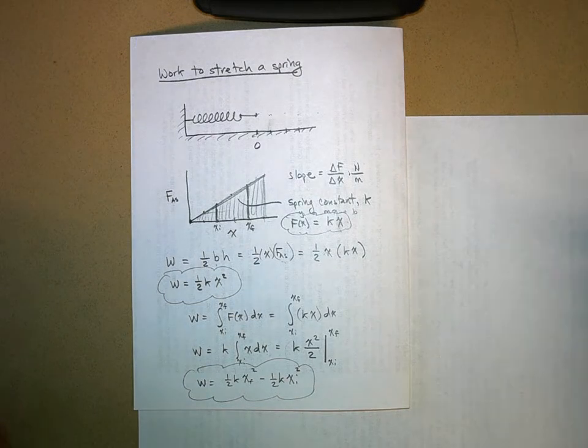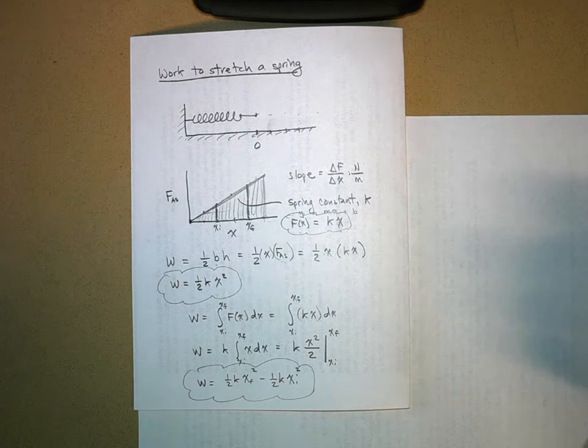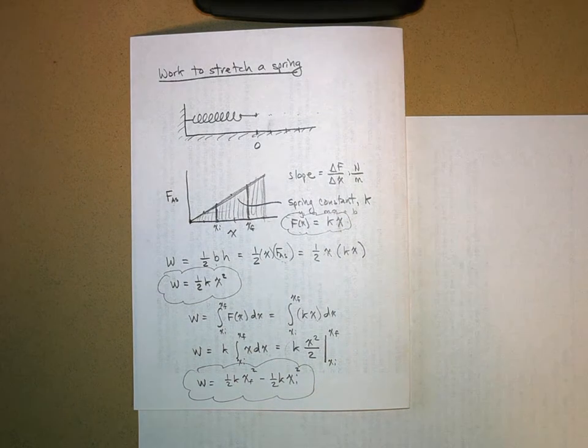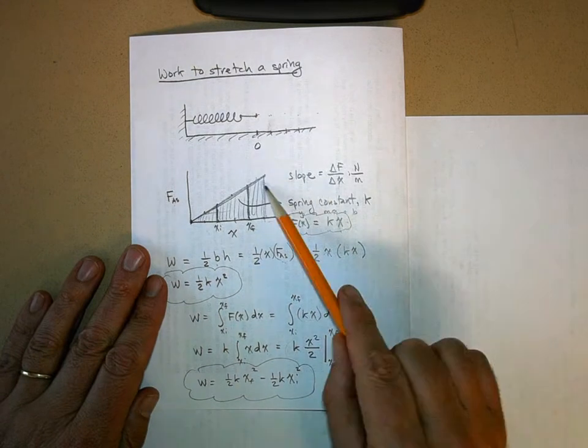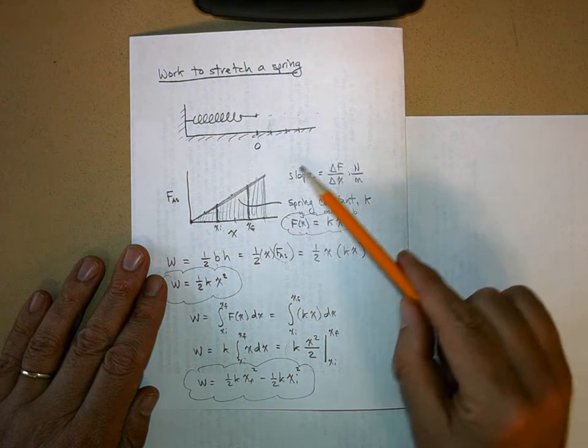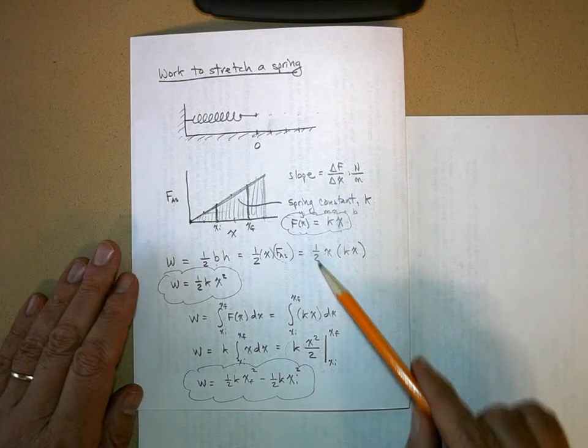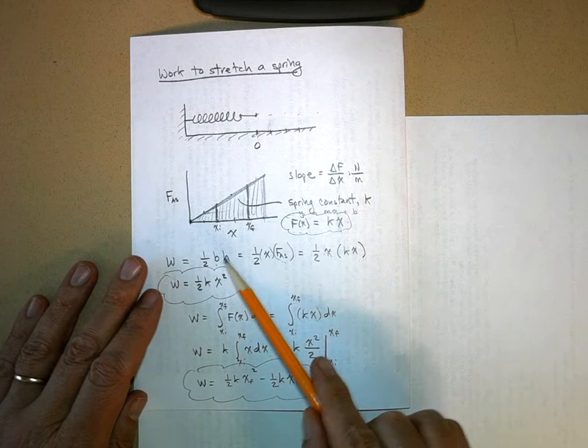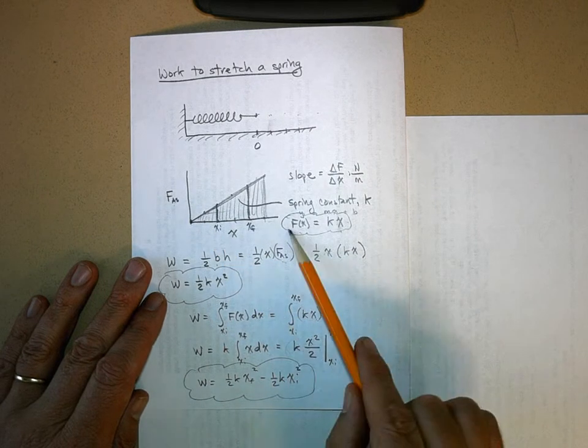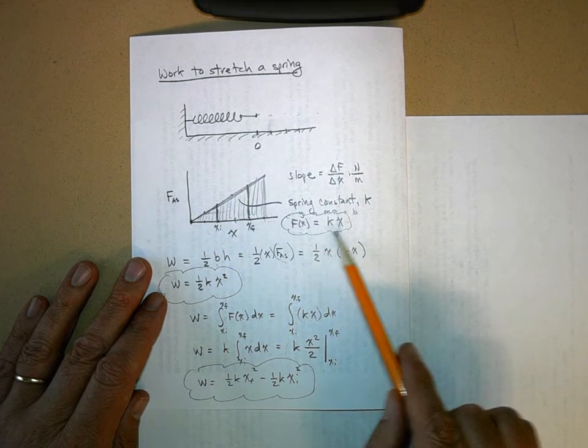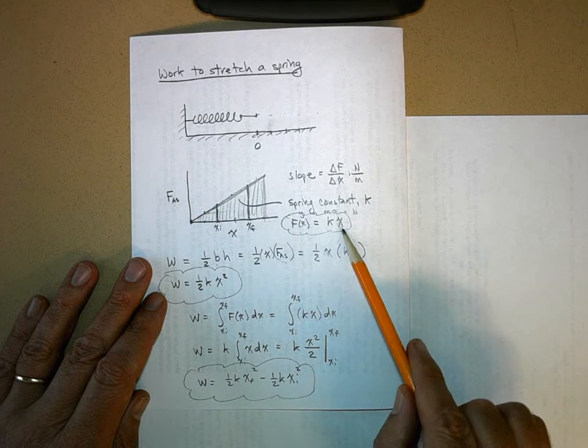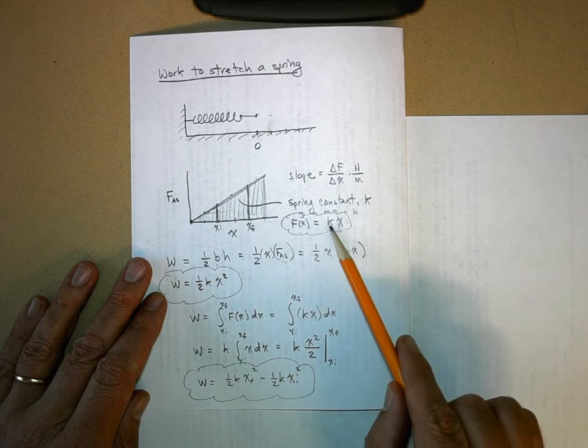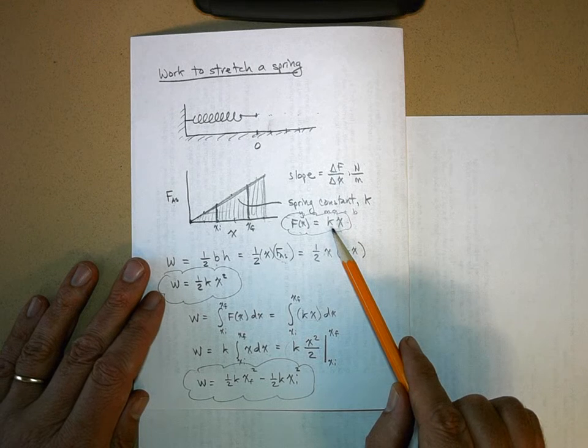Obviously, if you overstretch the spring, you can break it, and that's going to screw up this graph and all that. We're not talking about those kinds of situations, everything here is good. The slope of this line is called your spring constant, and so we get an equation for force as a function of our position x. The force as a function of x is equal to kx, where k is the slope of that line, and we call that slope the spring constant.